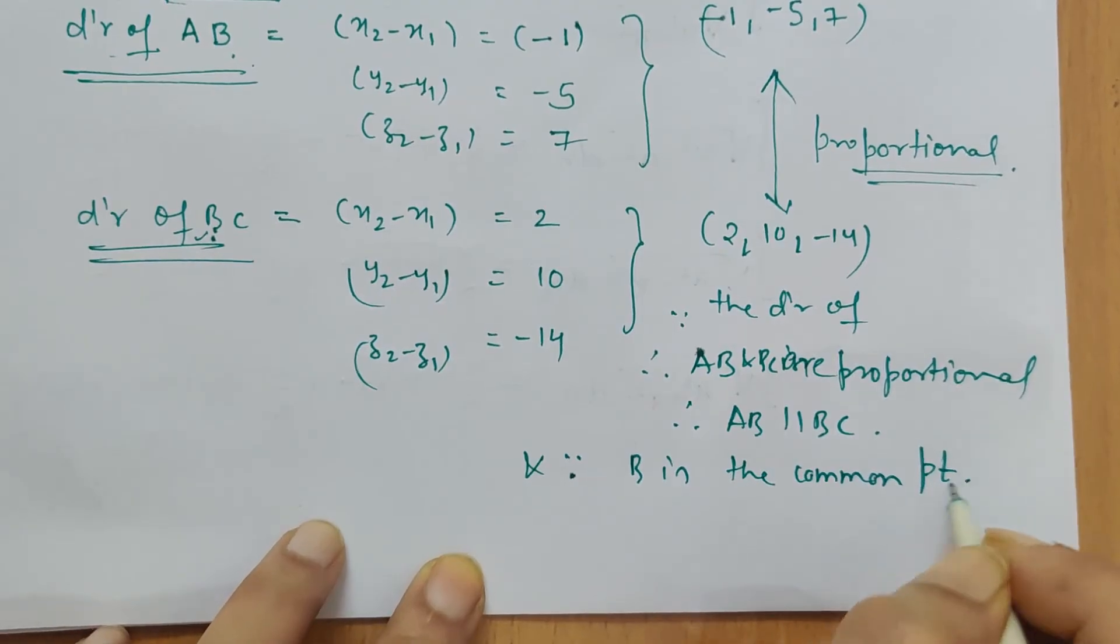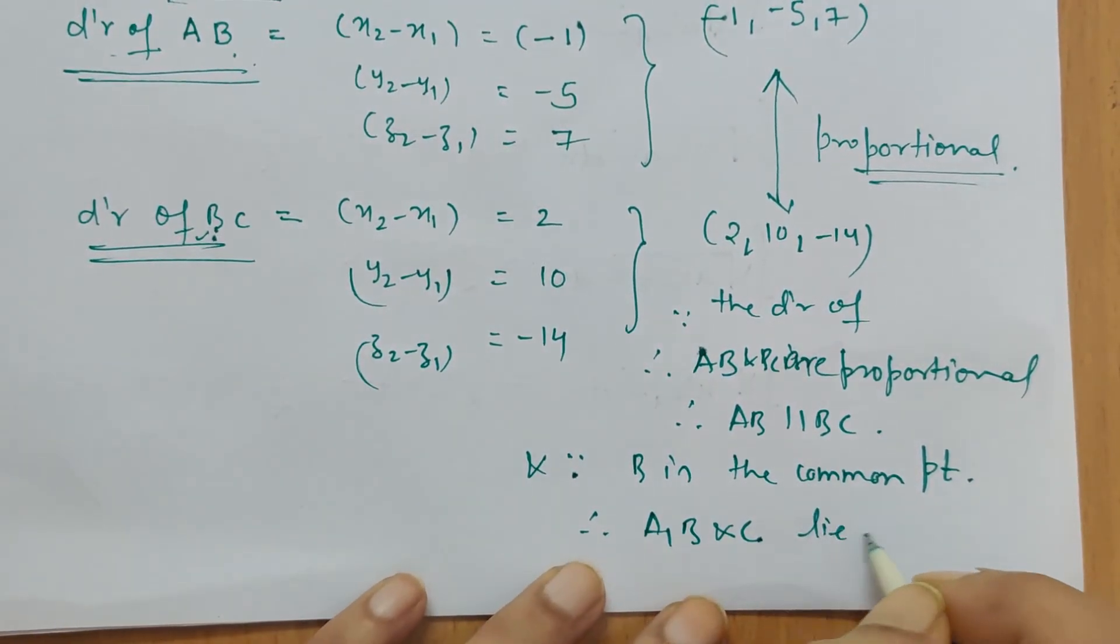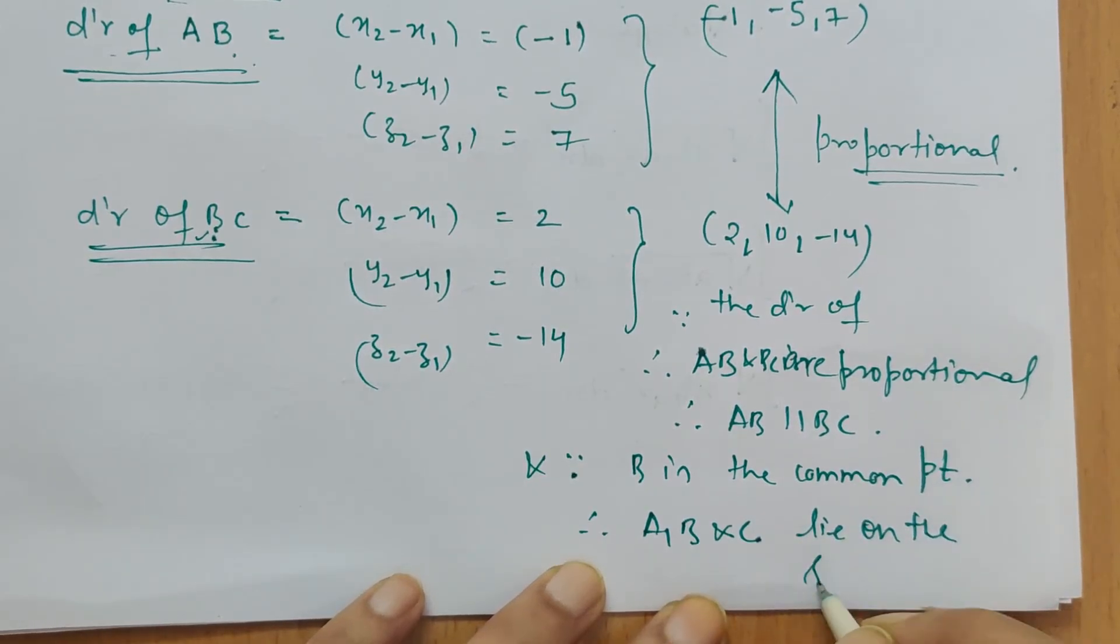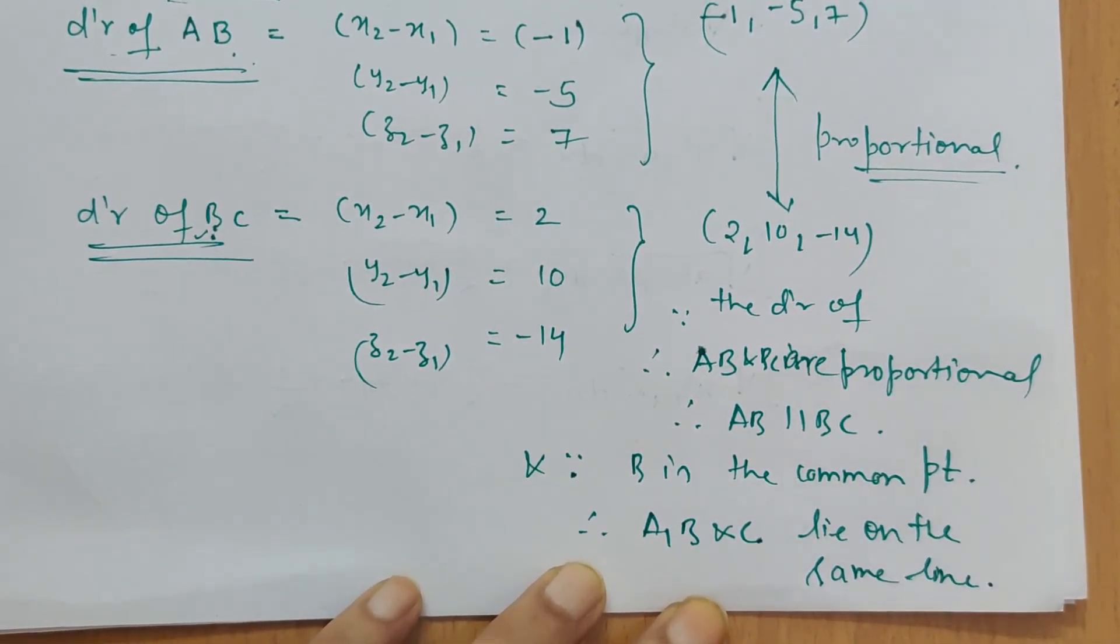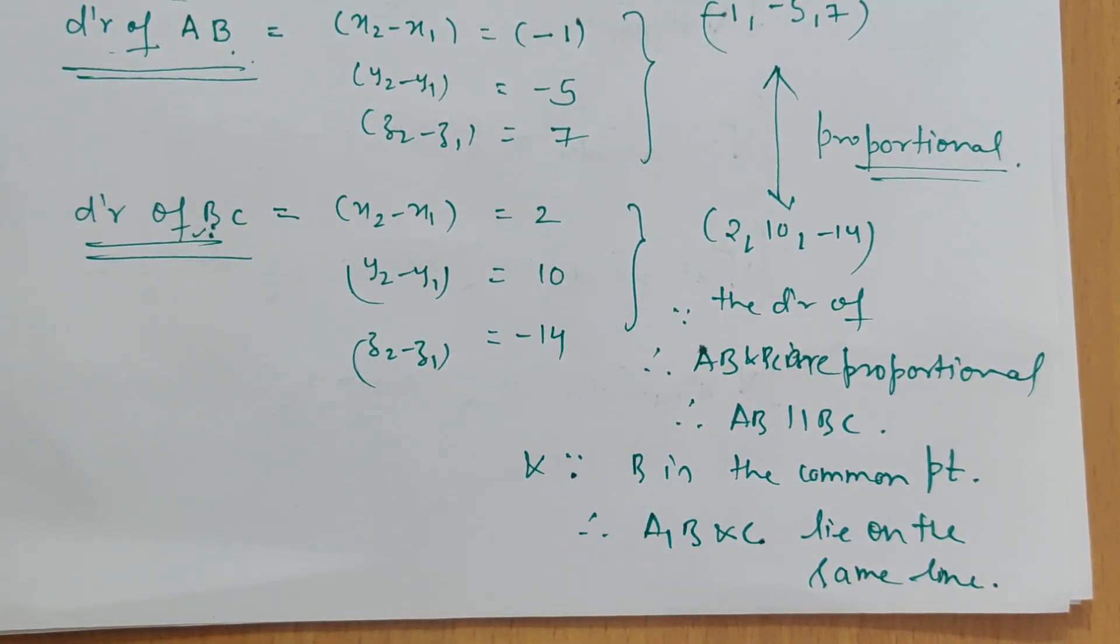...B is the common point, therefore A, B, and C lie on the same line. So this is how it is to be proved. Thank you.